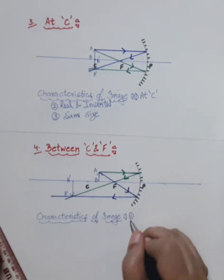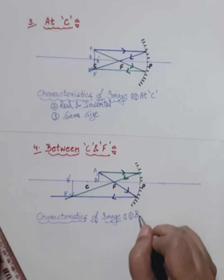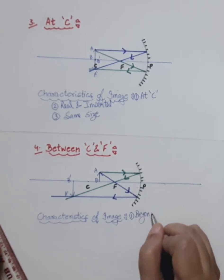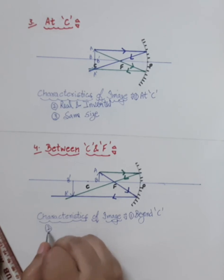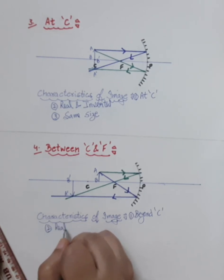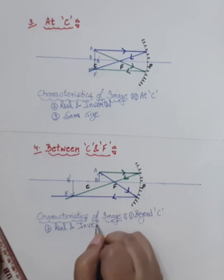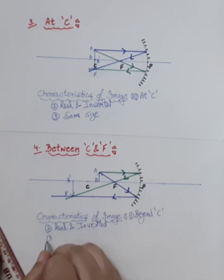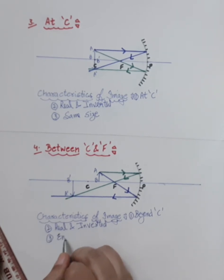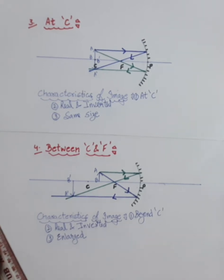The image is formed beyond C — beyond center of curvature. The nature is real and inverted, formed by real intersection of the rays. Comparing sizes, the image is bigger than the object, so it is enlarged.